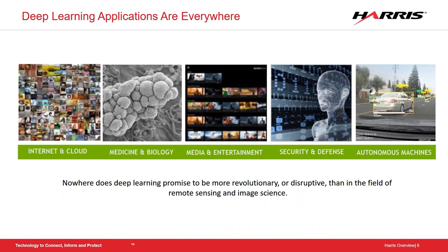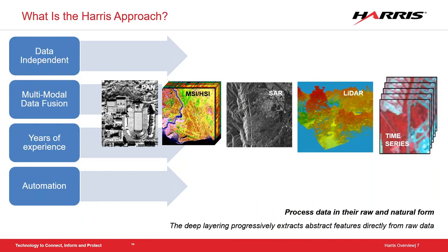We see machine learning in so many different capabilities: from online usage, medicine, biology, media entertainment, security and defense, and many more. Nowhere does deep learning promise to be more revolutionary than in the field of remote sensing and image science. Working with imagery, geospatial data, and deep learning requires a lot of specialized knowledge — there are many nuances in handling these particular types of data that are important to emphasize for our clients.